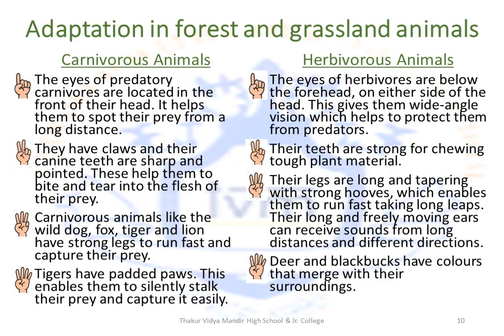Adaptation in forest and grassland animals — remember two types: carnivorous and herbivorous. For carnivorous animals: the eyes of carnivores are located in the front of their heads, which helps them spot their prey from a long distance. They have claws and sharp, pointed canine teeth which help them bite and tear the flesh of their prey. Carnivorous animals like wild dog, fox, tiger, lion and hyenas have very strong legs to run fast and capture their prey. Tigers have padded paws, enabling them to walk silently and stalk their prey.